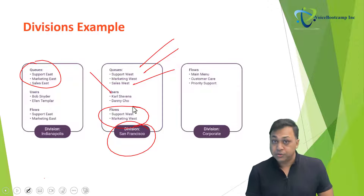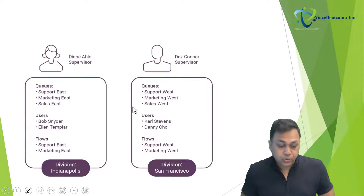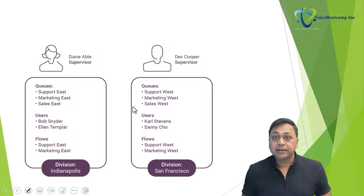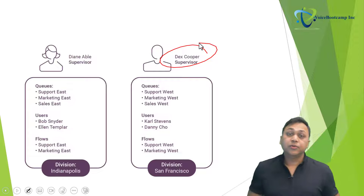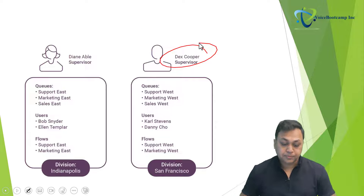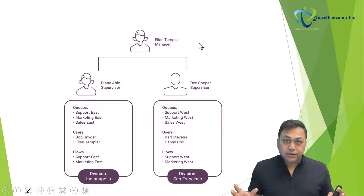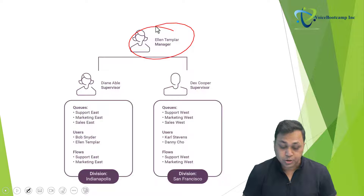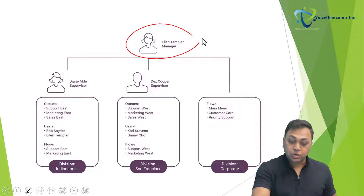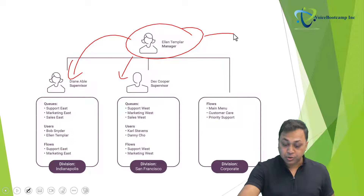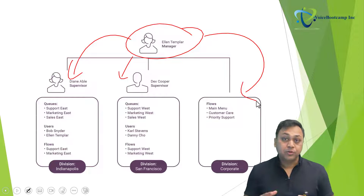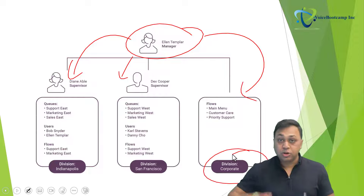After moving objects into the appropriate divisions, assign users the necessary role with the appropriate division. For example, Diane Abel has a supervisor role with access to the Indianapolis division, while Dex Cooper has a supervisor role with access to the San Francisco division. A manager responsible for both supervisors would get a role that provides a view of all supervisors they are responsible for. The manager could also monitor the main flow, which may belong to its own separate division.